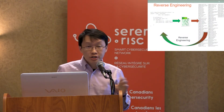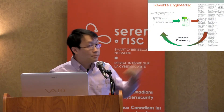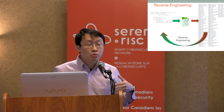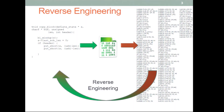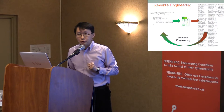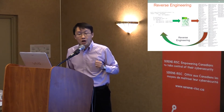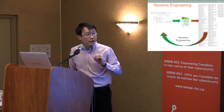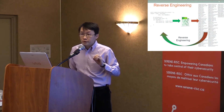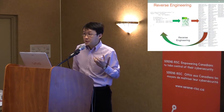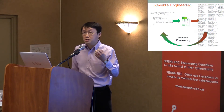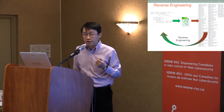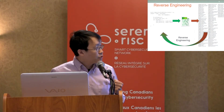In reverse engineering, we assume the reverse engineer has access to a binary executable file and would like to know more about the functionality of that executable file without having the source code. The first step is to disassemble the binary file into assembly code and try to understand it function by function. In reverse engineering it is often the primary step to analyze a piece of malware or to detect software plagiarism.